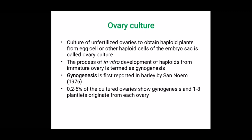The process of in vitro development of haploids from immature ovaries is termed as Gynogenesis. The term Gynogenesis and its mechanism was first reported in Barley by the scientist Sand Noam in 1976. Generally, in ovary culture, 0.2 to 6% of the cultured ovaries show Gynogenesis and 1 to 8 plantlets originate from each ovary.